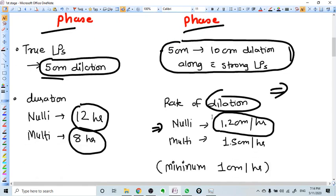The latent phase in nulliparous women averages 12 hours but can go up to 20 hours.